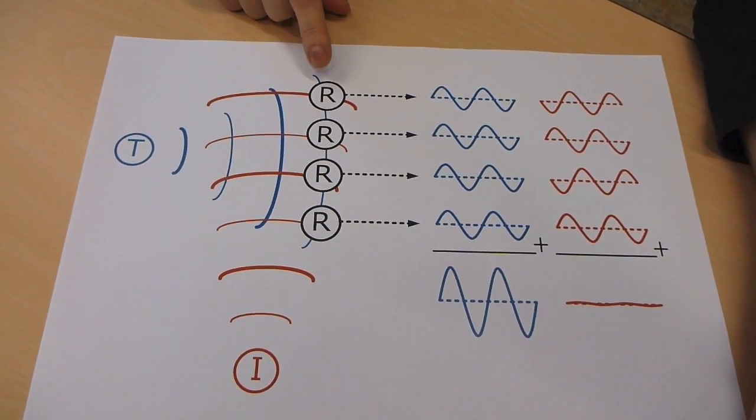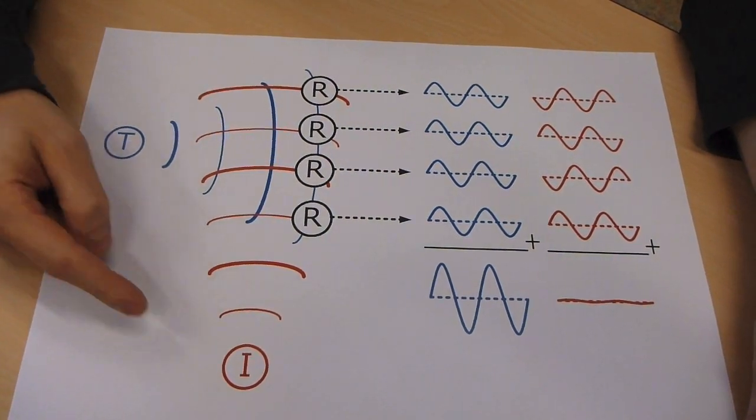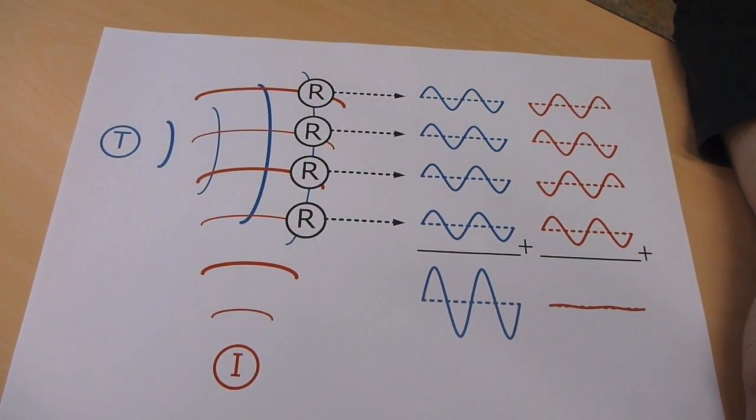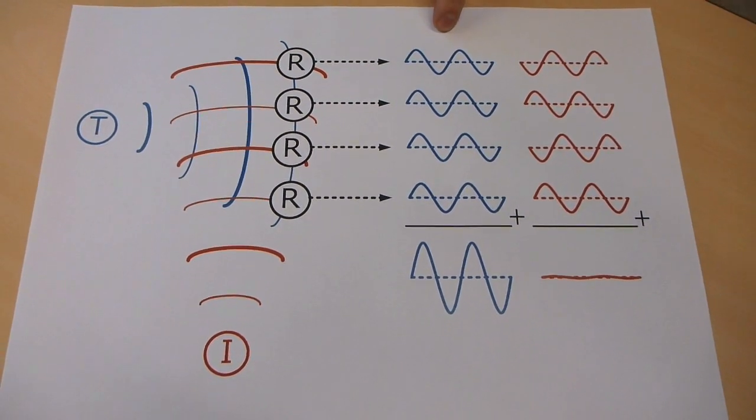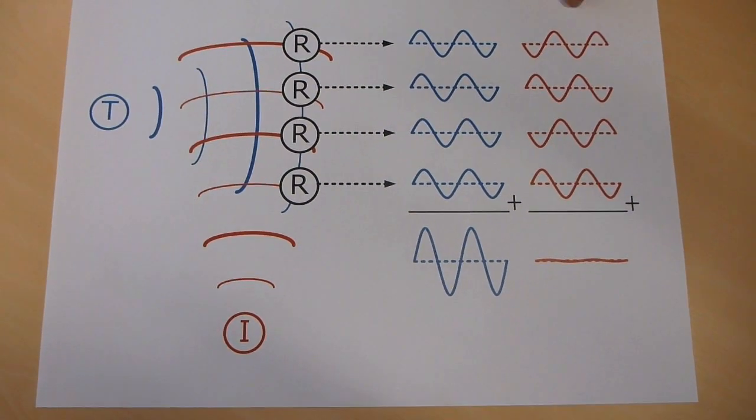This means that after summation our desired signal has maximum amplitude while the interferer is being cancelled.